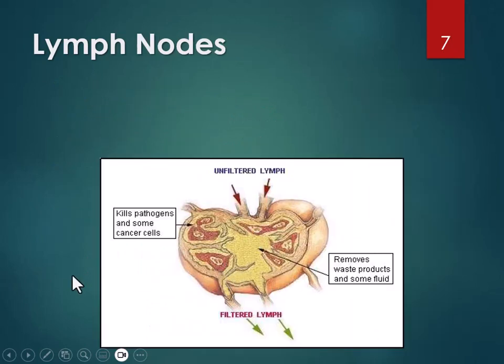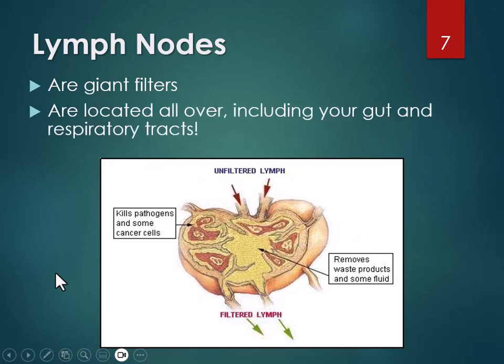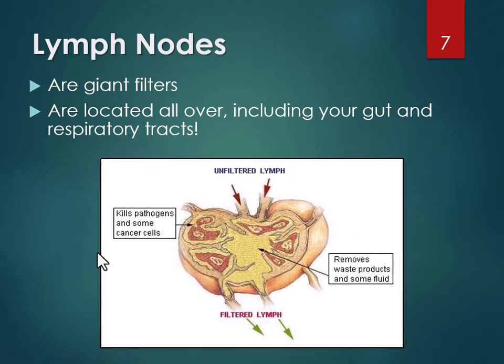Lymph nodes act like giant filters and are located all over. When you're sick, white blood cells congregate there and cause them to swell — that's why a doctor might feel your neck. You have cervical lymph nodes there, axillary lymph nodes under your arms, and even lymph nodes in your elbows. A lot of lymph tissue is in your gut and respiratory tract because the food you eat and air you breathe is not sterile. It's hard to see on a cadaver because it's clear or looks like a hunk of fat — not as noticeable as blood vessels.